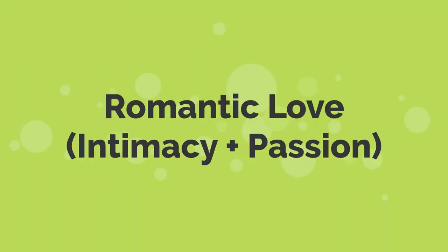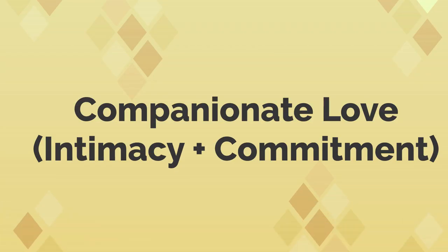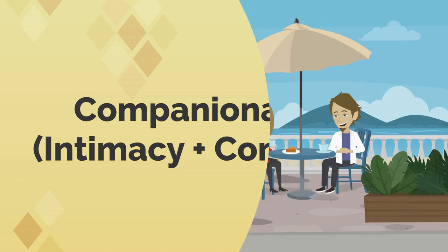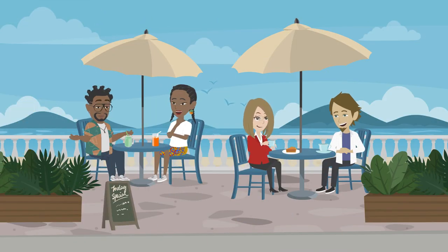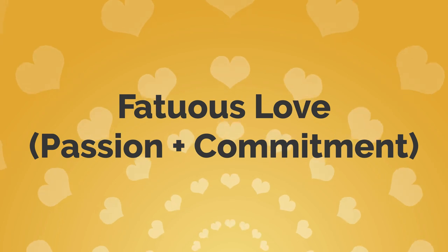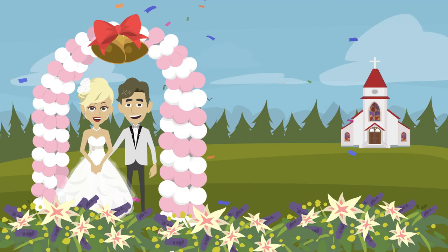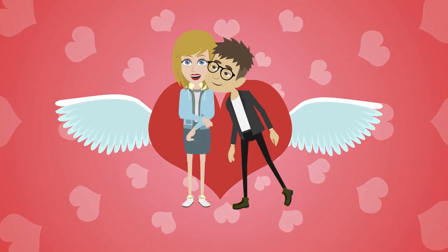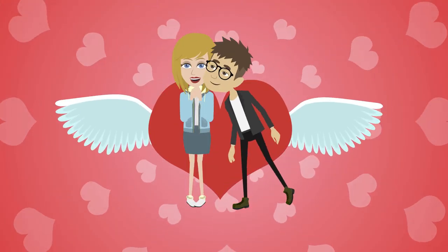Romantic love — intimacy plus passion — is a blend of physical attraction and emotional bond without the commitment. Companionate love — intimacy plus commitment — is a long-term committed friendship which lacks passion. Fatuous love — passion plus commitment — can be characterised by a whirlwind courtship and marriage where commitment is motivated largely by passion without the stabilising influence of intimacy.